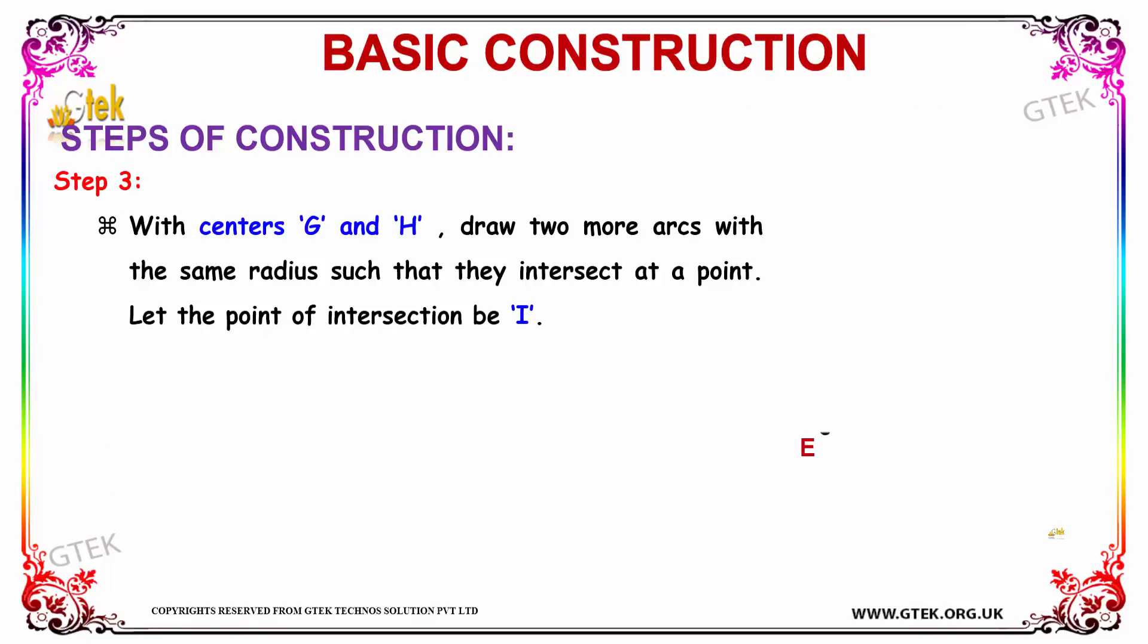The next step is, with the centers G and H, we draw two more arcs with the same radius such that they will be intersecting at a point. The intersecting point is said to be called as point of intersection and we can name it as I. This is the point of intersection.